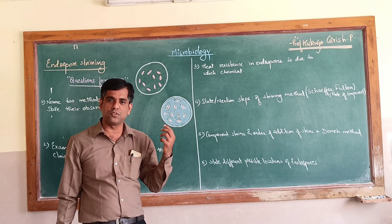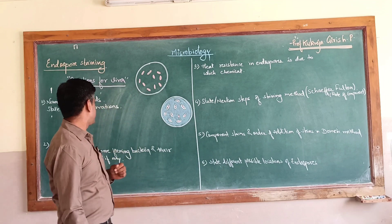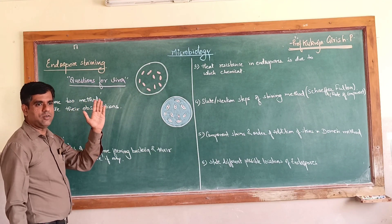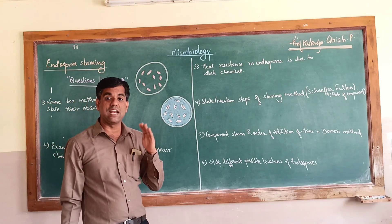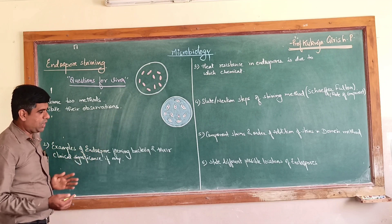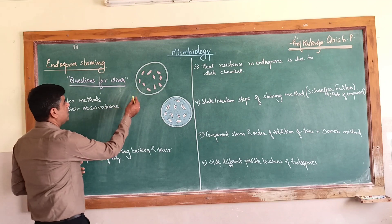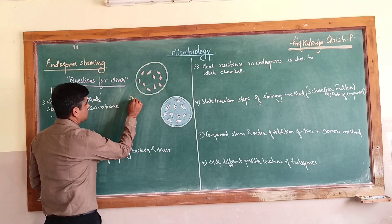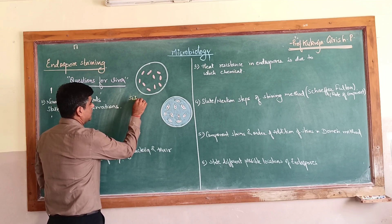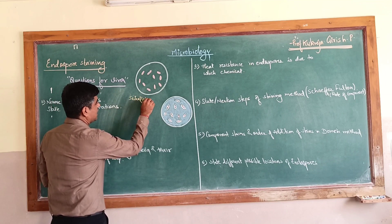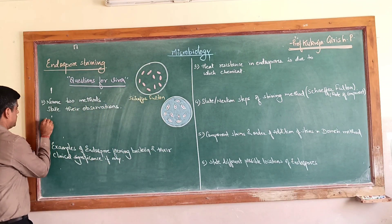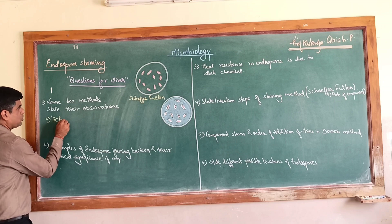The first question: name the two common methods generally used for staining the endospores, and state their observations. The two common methods are the Schaeffer-Fulton method, which is the most commonly used method today for staining the endospore.